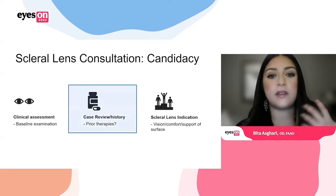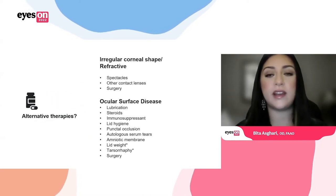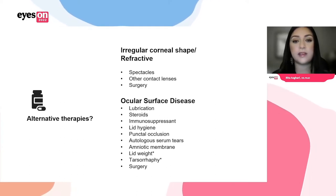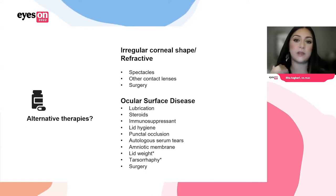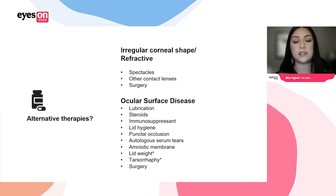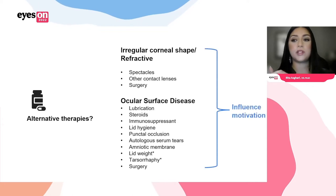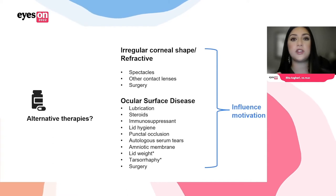Now let's talk about case history and what other prior therapies they have tried. For patients with ocular surface diseases, have they tried the hierarchy of conventional management — lubrication, steroids, immunosuppressants, cyclosporine, etc.? Reviewing this is important because whether they have tried these therapies or not will influence their motivation and their likelihood to be successful with a scleral lens.